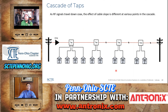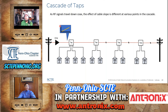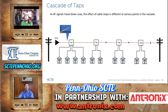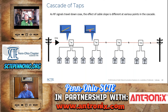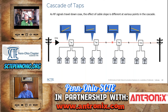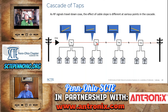So why do you condition taps? In a cascade of taps, as RF travels down the coax, the effect of cable slope is different at various points in the cascade. With frequency on the x-axis and response on the y-axis, a typical node or amplifier has a slight up-tilt at its output. As the signal travels down the coax, that tilt decreases, and depending on the length of coax, each tap will have a different frequency response at its input.